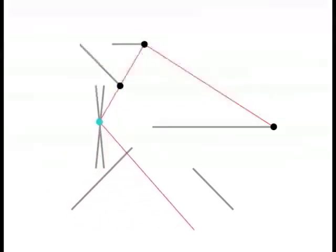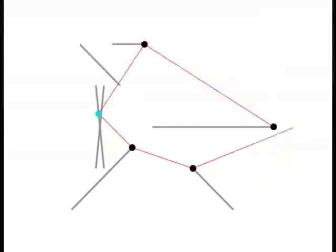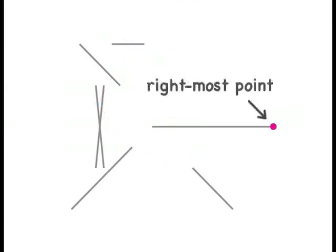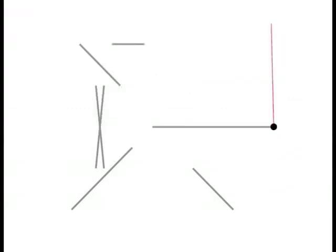For simplicity, we demonstrate the method on uncertainty regions that are segments. We fix an imprecise point on the rightmost point of all uncertainty regions. Then, we tie a rubber band to this fixed point, and wrap it around all uncertainty regions.